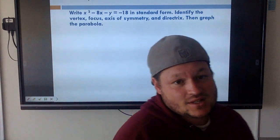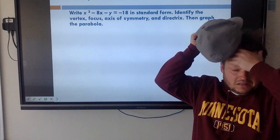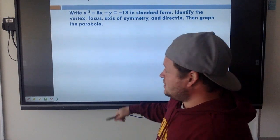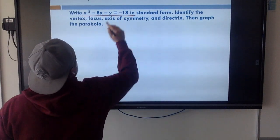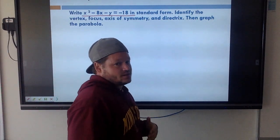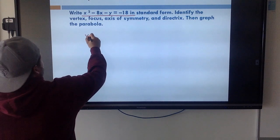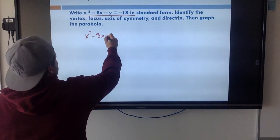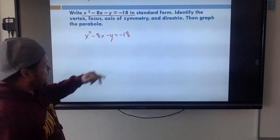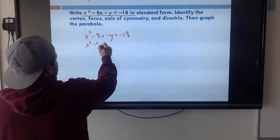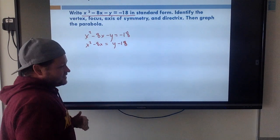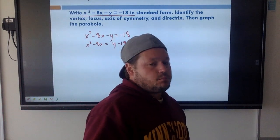Okay, here we go. This one is going to be more of what you're actually going to see - this is your standard question as far as how challenging it is. Here's my formula. Let's get that into standard form first - you're really going to want to pay attention because this can get a little confusing. x squared minus 8x minus y equals negative 18. We need to split our x's and y's so I'm going to move the y over: x squared minus 8x equals y minus 18. Now this is when you need to complete the square.